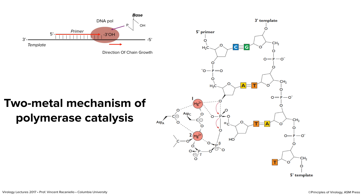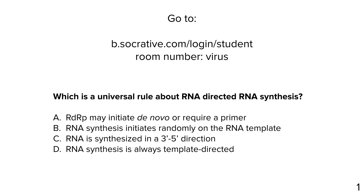Which is a universal rule about RNA-directed RNA synthesis? The answer is A — the RNA polymerase may initiate de novo or require a primer. That's a universal rule. RNA synthesis is not randomly initiated. The template is copied in the 3' to 5' direction, but synthesis is always 5' to 3' prime. And it's always template-directed, with only rare exceptions of non-template-directed RNA synthesis.